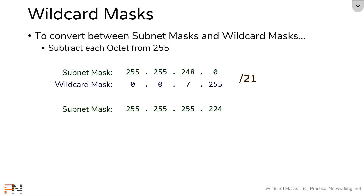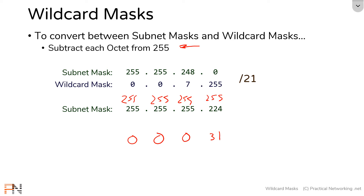Here is another subnet mask. Let's convert it to a wildcard mask using the subtraction from 255 trick. 255 minus 255 is 0, 255 minus 255 is 0, 255 minus 255 is 0, and 255 minus 224 is 31. Which means the subnet mask of 255.255.255.224 correlates to the wildcard mask of 0.0.0.31.